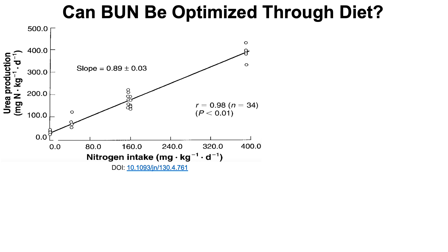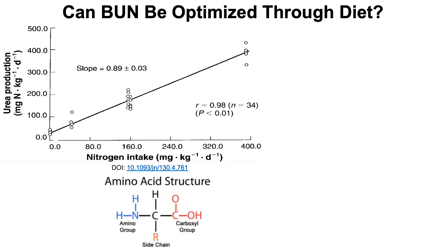Here we're looking at a plot of nitrogen intake against urea production. The higher the dietary nitrogen intake, the higher the amounts of urea that are produced. This correlation is almost perfectly linear, with a correlation of 0.98 — a perfectly linear correlation, as good as it gets, is 1.00. Dietary nitrogen comes almost exclusively from amino acids, which are the building blocks of protein. So if you eat a lot of protein, you'll have a high content of dietary nitrogen, which should increase your urea production, and correspondingly, higher levels of blood urea nitrogen.